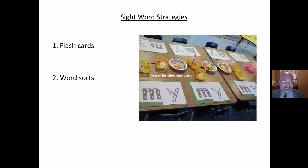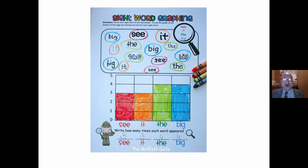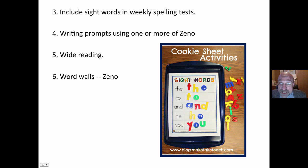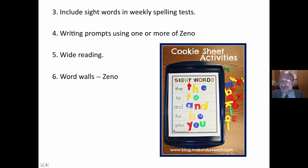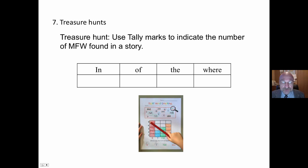Some strategies: flashcards, word sorts — give students five to fifteen words and they put them in groups according to letter patterns. A great game is to have them count the number of sight words, circle them, and make a graph. Include sight words in weekly spelling tests. Use writing prompts with one or more of the Xeno words. Wide reading and creating word walls. Cookie sheet activities — do a Google search for a lot of neat activities to reinforce sight words.